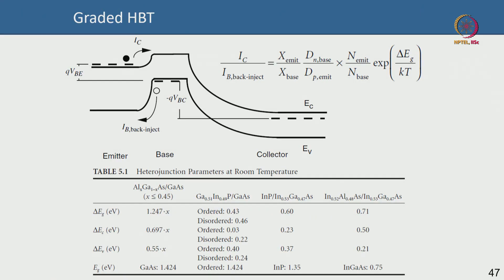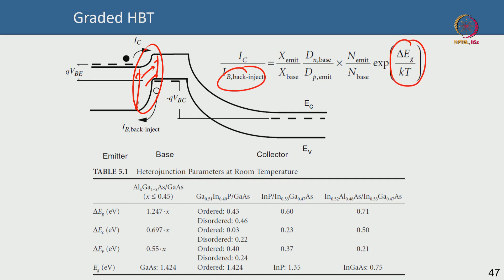We are talking about a graded HBT where the base-emitter junction can be graded. When the base-emitter junction is graded there is no abrupt discontinuity — you gradually grade from one composition to another. In that case the back injection component, which is undesirable, is suppressed by e to the power (ΔEg / kT), which is even better.